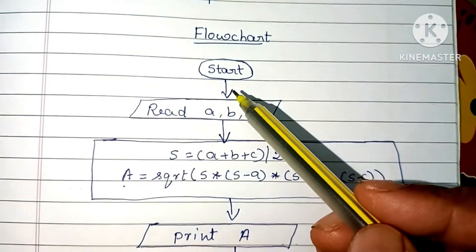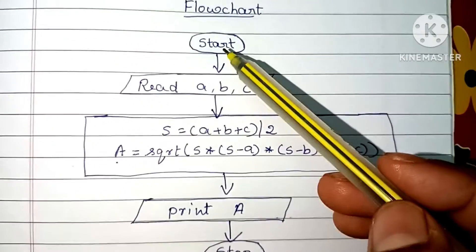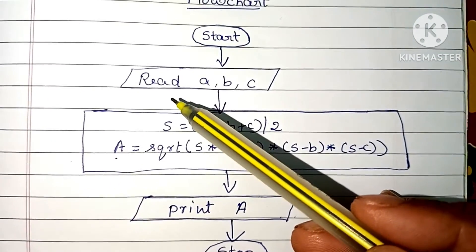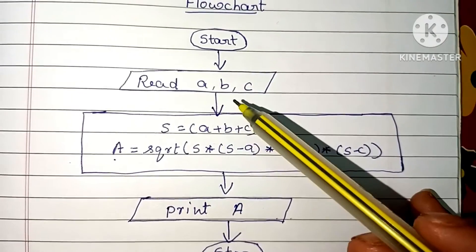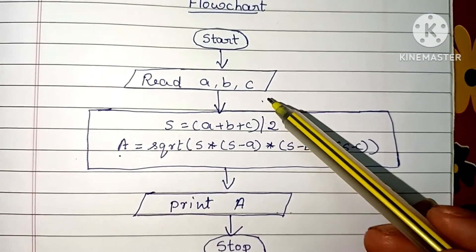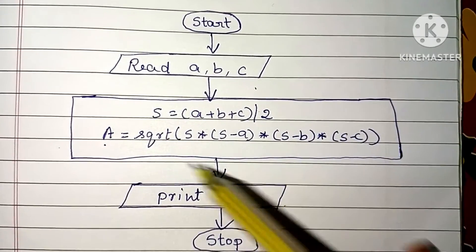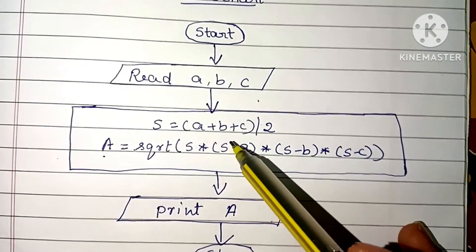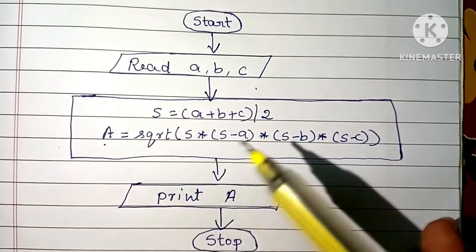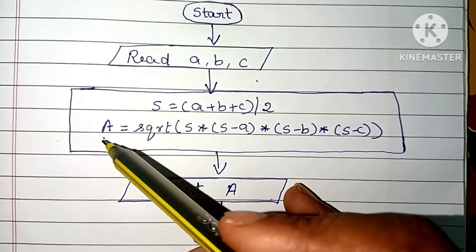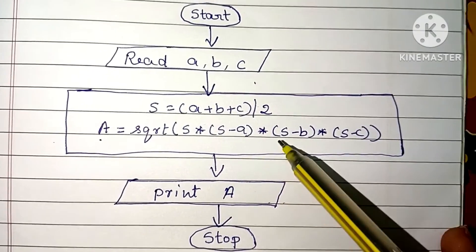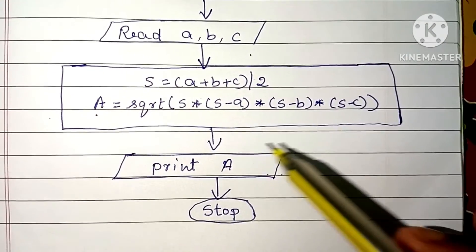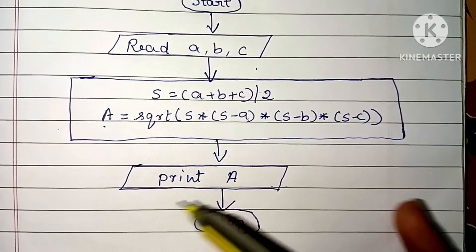This is the flowchart to find the area of a triangle. The flowchart starts with the start statement written within an oval shape. Next we read three input variables — a, b, and c — input variables are always written within a parallelogram shape. Next we calculate: first the semi-perimeter s equals a plus b plus c divided by two, then the area A equals the square root of s into (s minus a) into (s minus b) into (s minus c). Finally, we print the output value A.